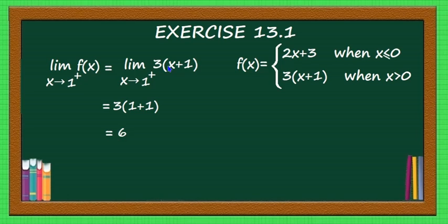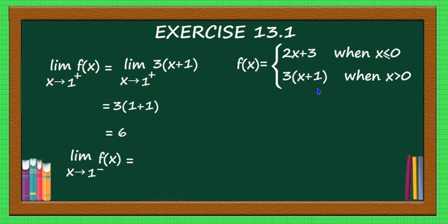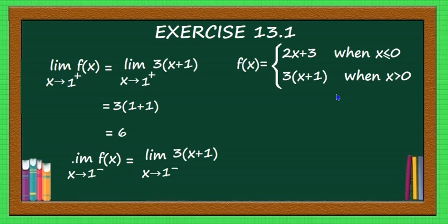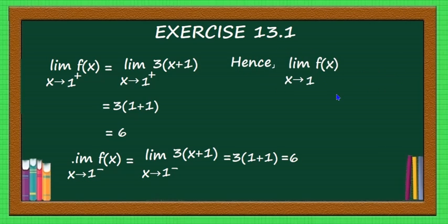Now find limit extending to 1 minus of f(x). Here 1 minus means slightly less than 1, but it is still positive — for example 0.9, 0.99, 0.999, and so on. All these numbers are positive, so you have to use the same definition: when x is greater than 0, the function is 3 into x plus 1. So the limit extending to 1 minus is also 3 into 1 plus 1, which is equal to 6. The left-hand limit and right-hand limit are both equal to 6, therefore limit extending to 1 of f(x) is equal to 6.